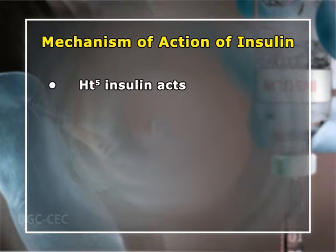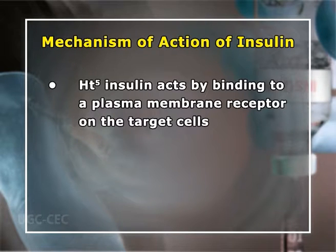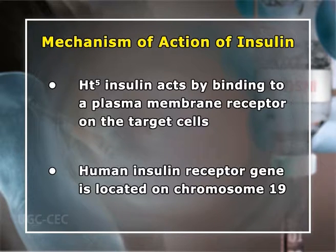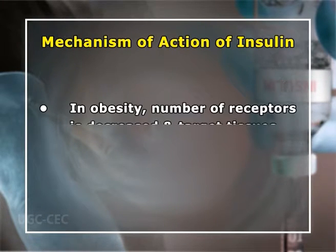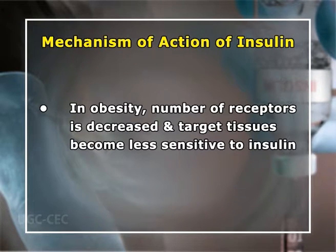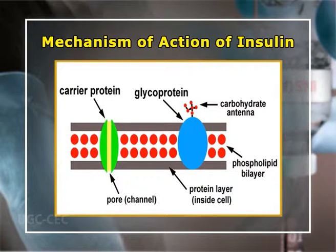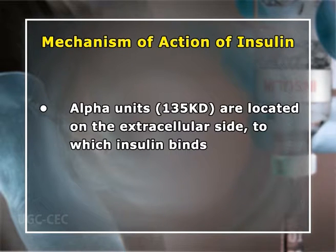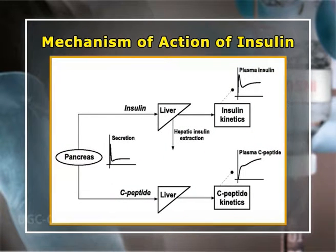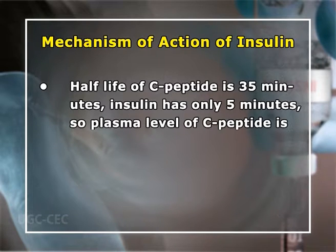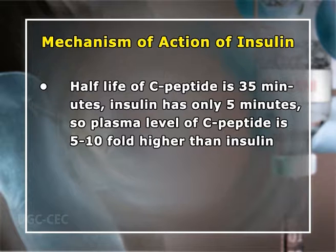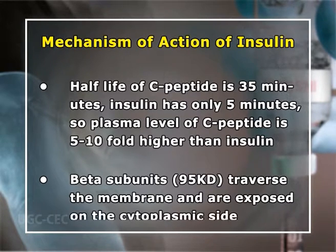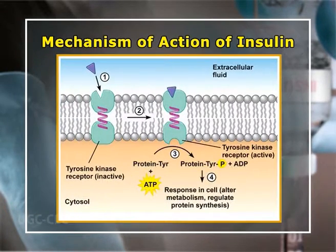Regarding the mechanism of action: insulin acts by binding to a plasma membrane receptor of target cells. The human insulin receptor gene is located on chromosome 19. In obesity, the number of receptors is decreased and target tissues become less sensitive to insulin. The insulin receptor is a glycoprotein with four subunits — two alpha and two beta subunits. The alpha units (135 kDa) are located on the extracellular side to which insulin binds. Insulin and C peptide are synthesized and secreted in equimolar quantities, but the half-life of C peptide is 35 minutes versus only 5 minutes for insulin, so plasma C peptide levels are 5- to 10-fold higher. The beta subunits (95 kDa) traverse the membrane and are exposed on the cytoplasmic side; the beta subunit has tyrosine kinase activity.